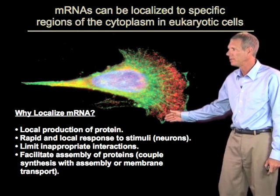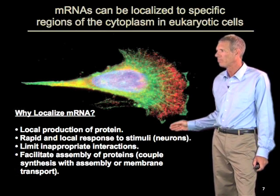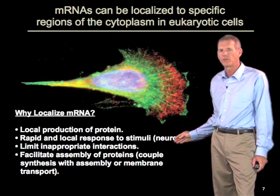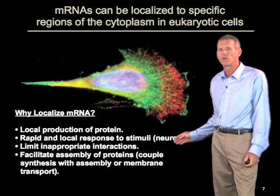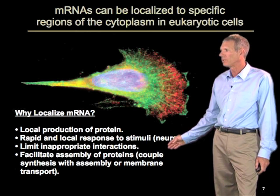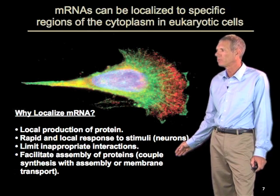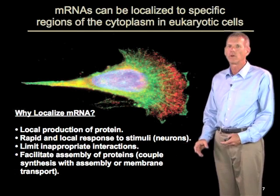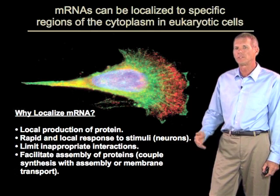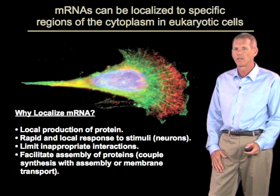There are other examples where we need to localize mRNAs for other reasons. For example, in neurons, the localization of mRNAs to specific synapses allows a rapid and local response to various stimuli. Localizing RNAs can also limit inappropriate interactions and can facilitate the assembly of proteins. For example, by localizing mRNAs to some membrane compartments, proteins can be transported across that membrane during their biogenesis more efficiently.